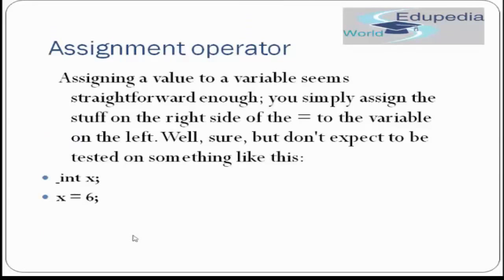Moving forward to assignment operator. Assigning a value to a variable is straightforward — you simply assign whatever is on the right-hand side of the equals-to sign to the variable on the left-hand side. You have seen in our previous examples we are using the assignment operator to assign a value. The value of the right-hand side is assigned to the left-hand side. It is a very simple concept, and you should not expect to be tested on it in any exam.